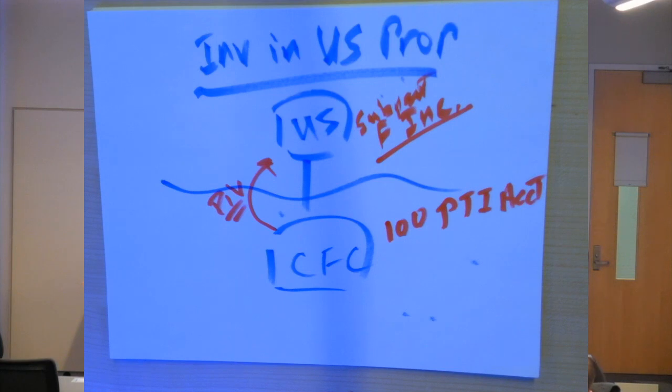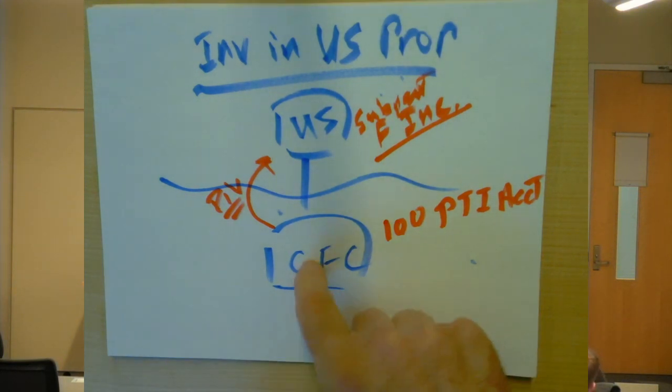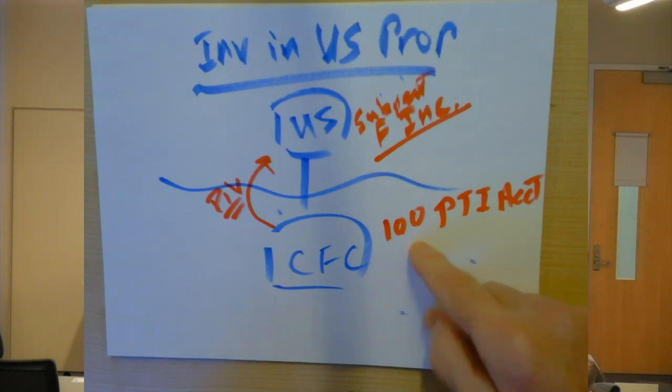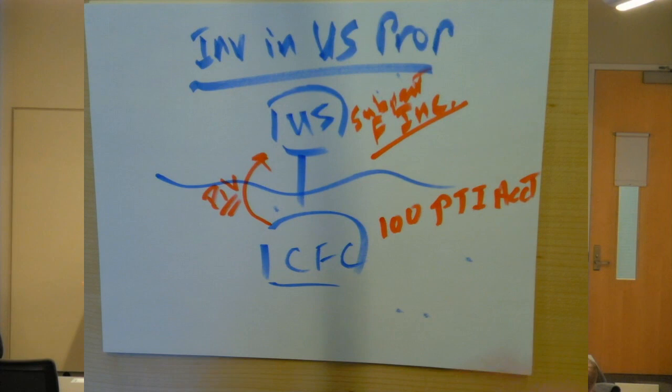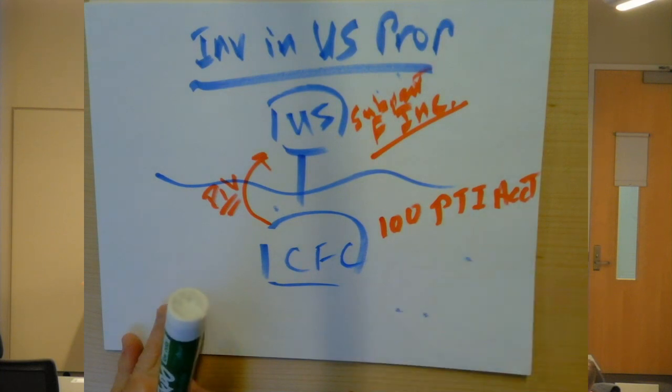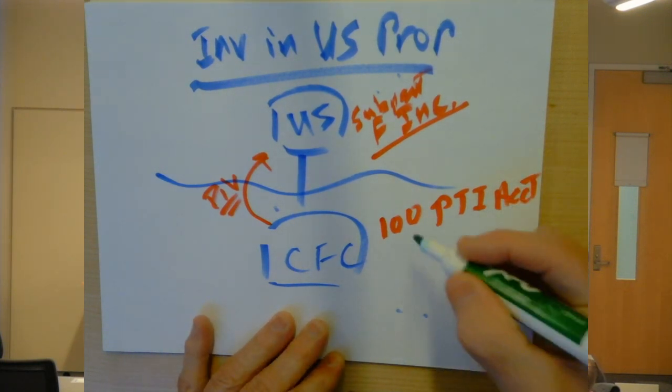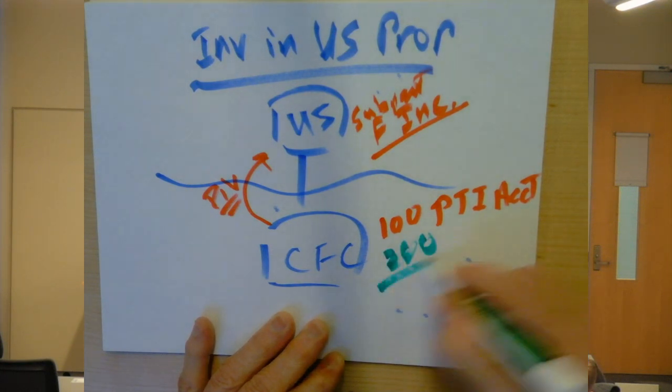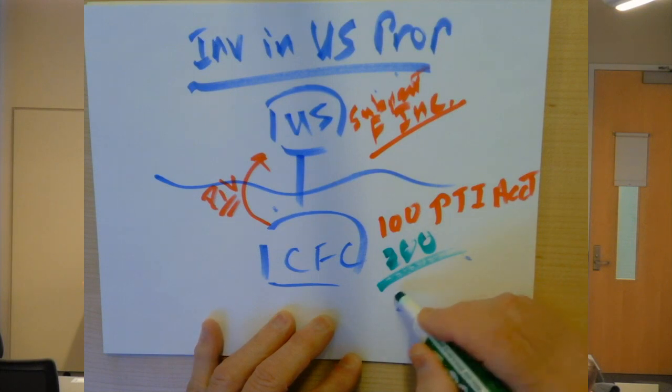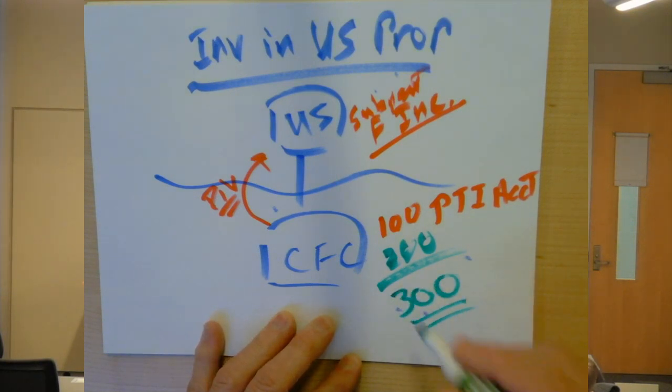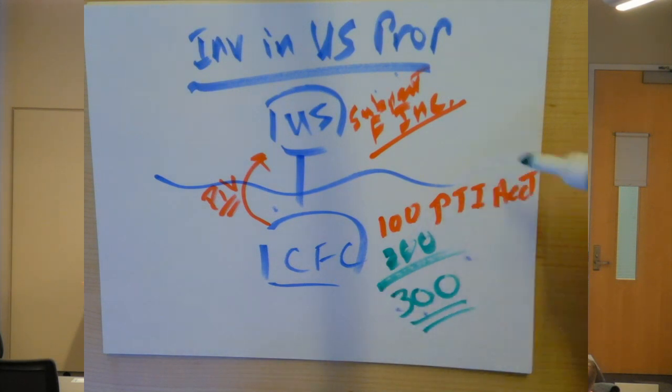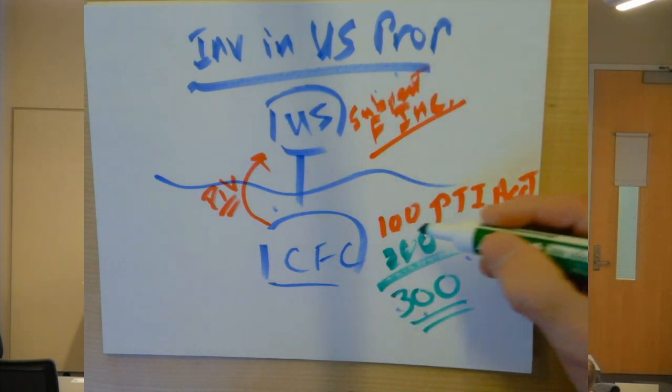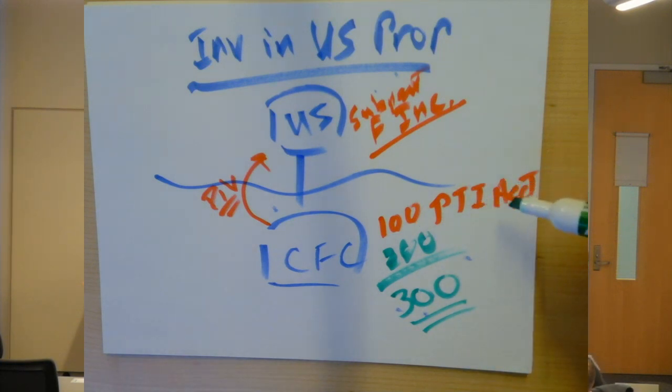The reason I bring this up again is that the CFC had 100 of previously taxed income, but let's say in the year when it had 100 of subpart F, we're looking at one taxable year for simplicity, the 100 was not its only income. It also had 200 of income which was not subpart F income. So it had a total of 300 in that year, but only 100 of it was subpart F income that created this previously taxed income account.